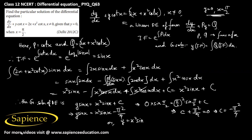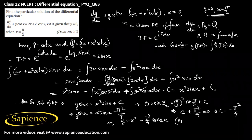Sorry, there's a correction here. Dividing through by sin(x), the particular solution is y = x² − (π²/4)·csc(x). This is the required particular solution of the given differential equation.